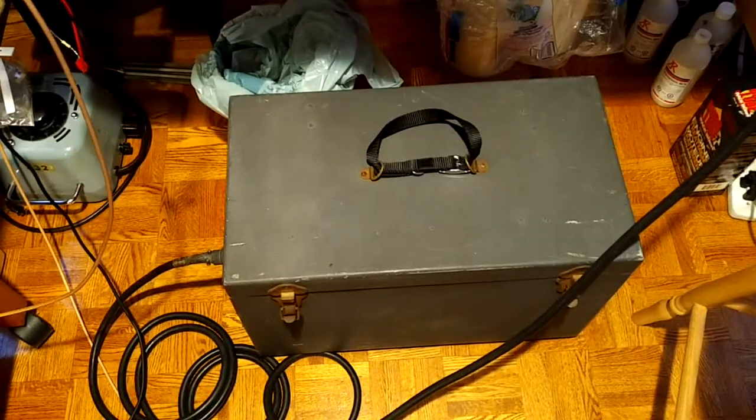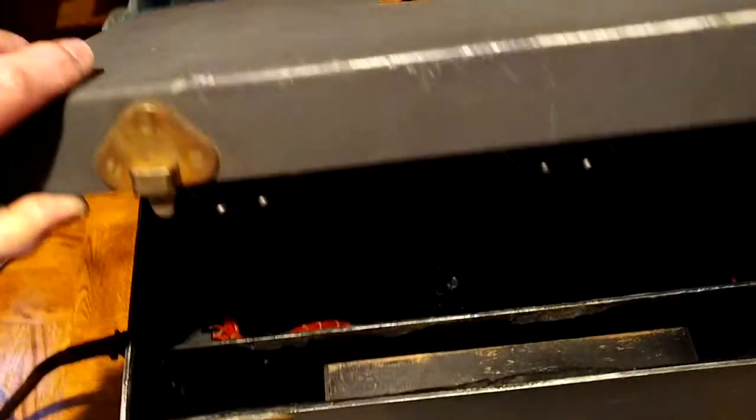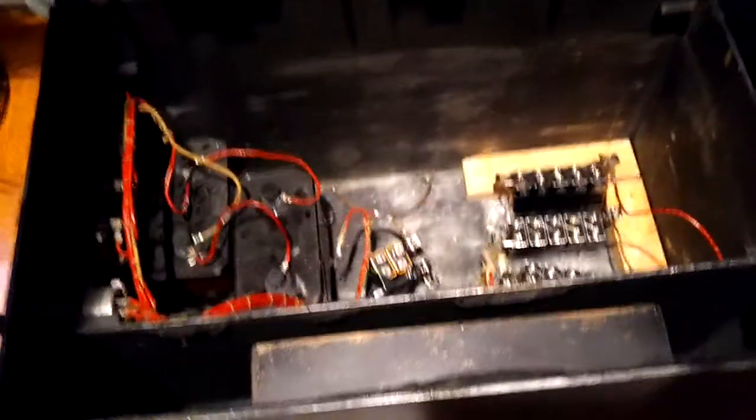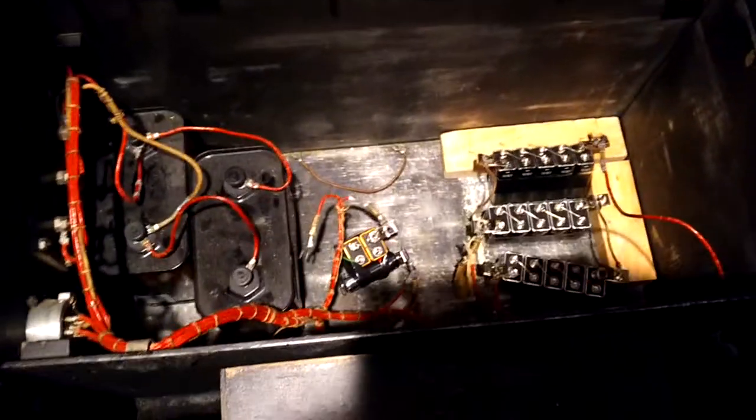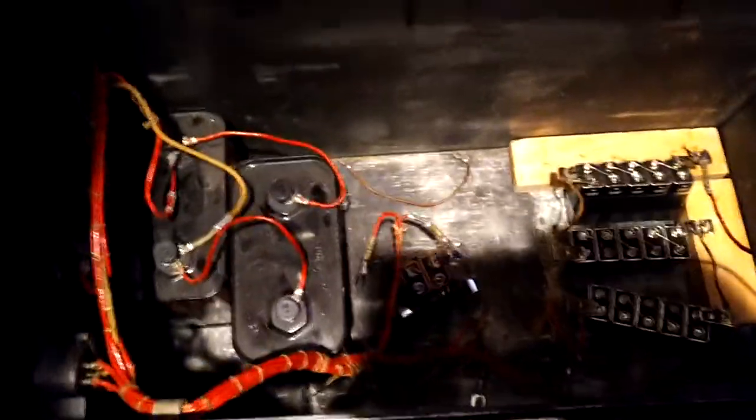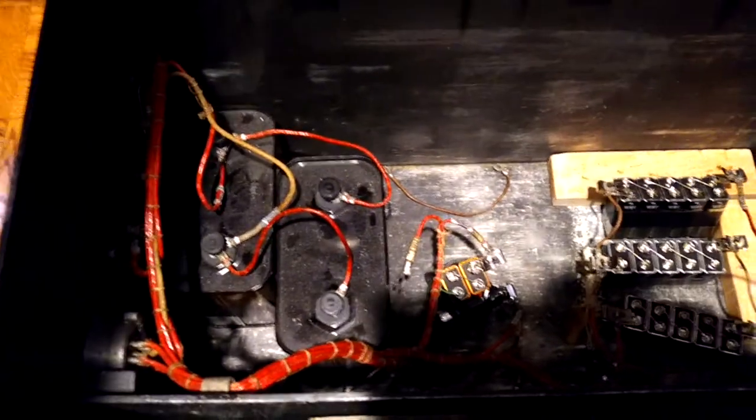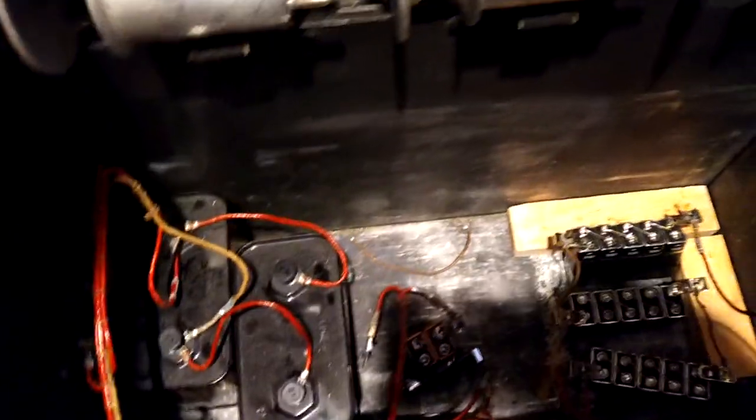It's powered by batteries because when you do field strength measurements, you work in the field. So you need 135 volts, 90 volts, and 22.5 volts, and 6 volts. That's B, C, and A batteries, respectively.